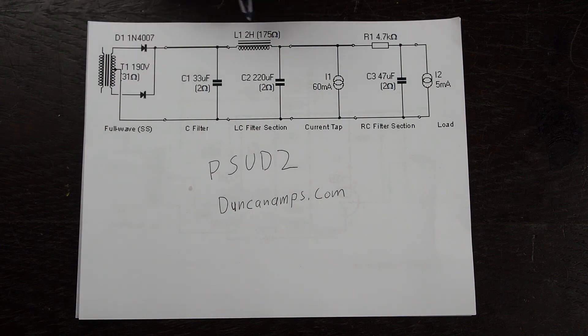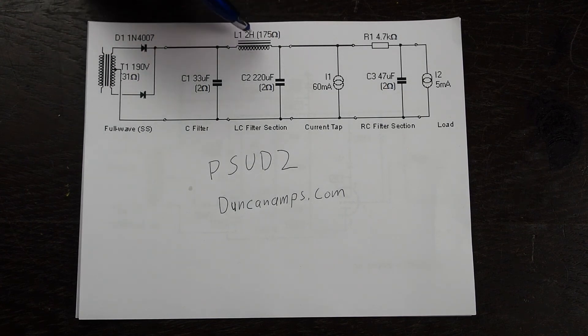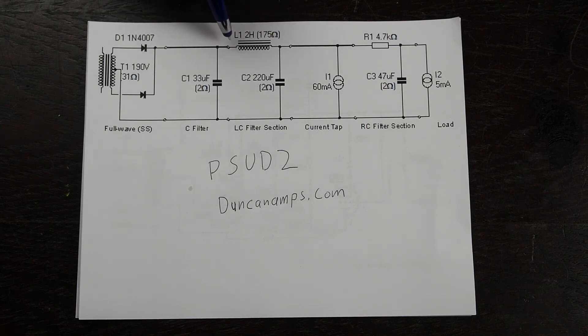The next phase is it goes through this 2 henry choke which has 175 ohms across it. What a choke does is it helps filter out the loops in the waves in the AC and it allows DC to flow through more than AC, so it acts as additional filtering to what these capacitors are doing.